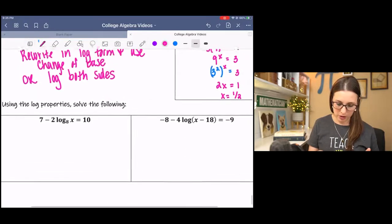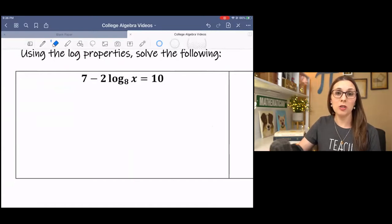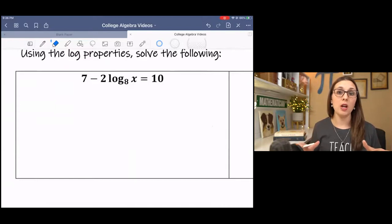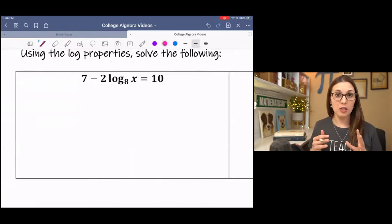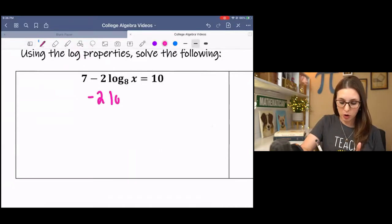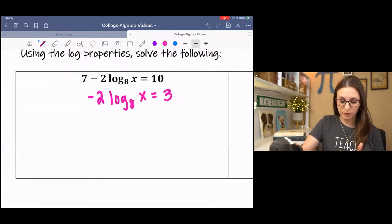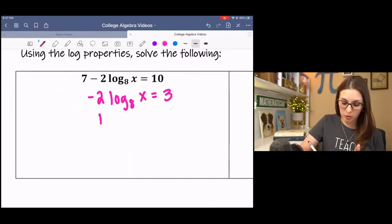So we have some different situations going on down here. I love these equations because we get to use everything we've learned. We've got all these tools that we get to unpack and use to solve these equations. So if you're unfamiliar with your log properties, it's a really good idea to go back and study those. But basically, what we're doing first, before we get into log properties, is to isolate the log term, which means we're going to have to subtract 7. And then this is negative 2 times log base 8 of x. So I'm going to divide by negative 2 next.